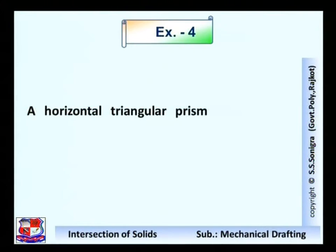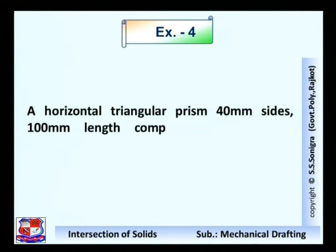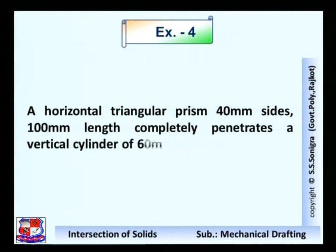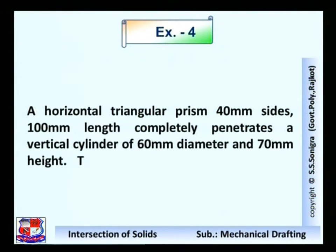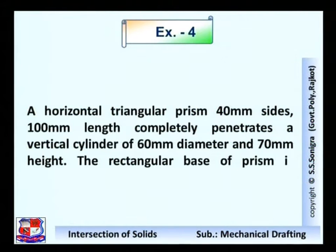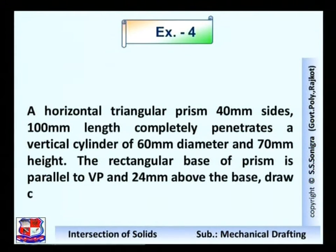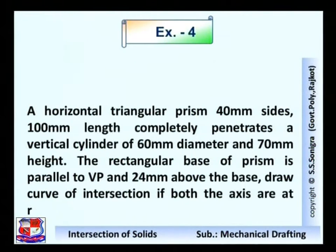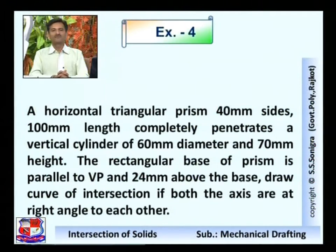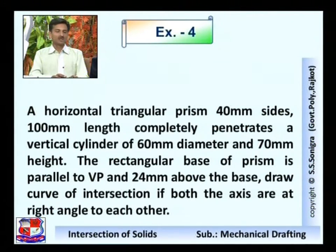Problem number four: A horizontal triangular prism, 40 mm sides and 100 mm length, completely penetrates a vertical cylinder of 60 mm diameter and 70 mm height. The rectangular base of the prism is parallel to VP and 24 mm above the base. Draw the curve of intersection if both axes are at right angles to each other. First, think about the given data.